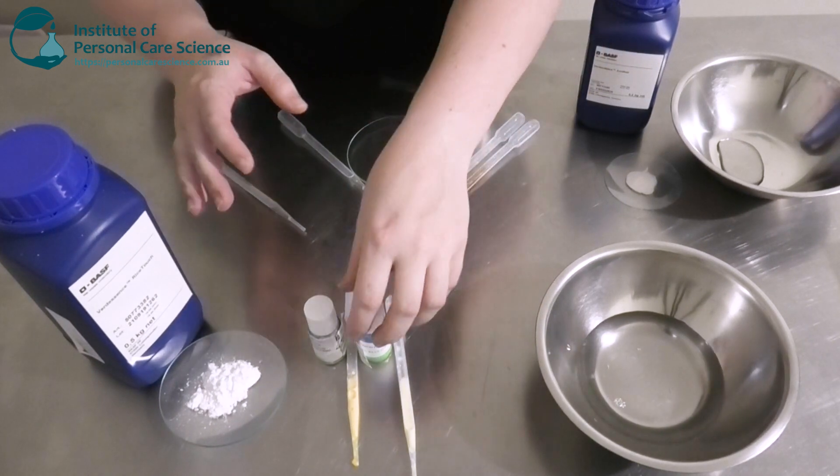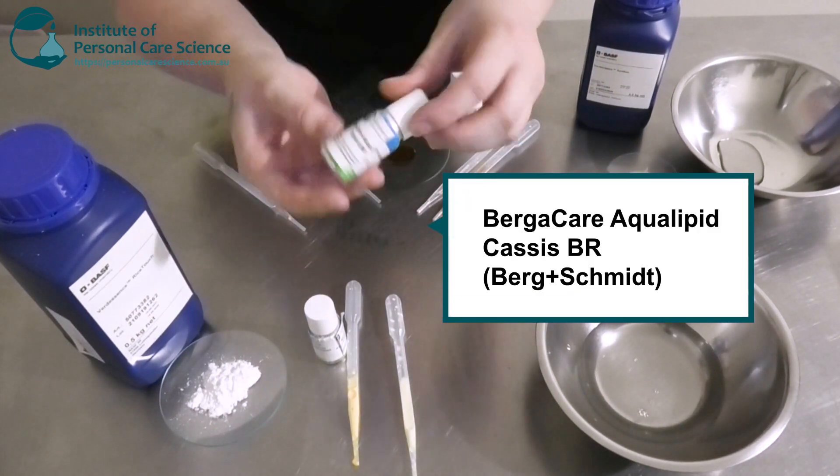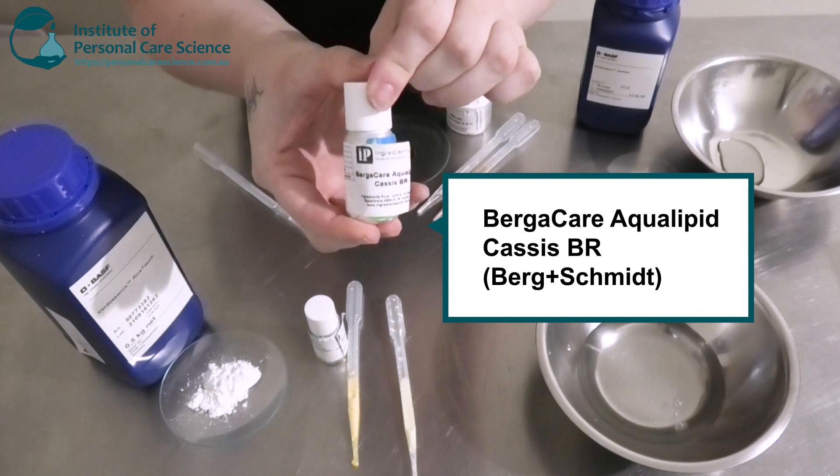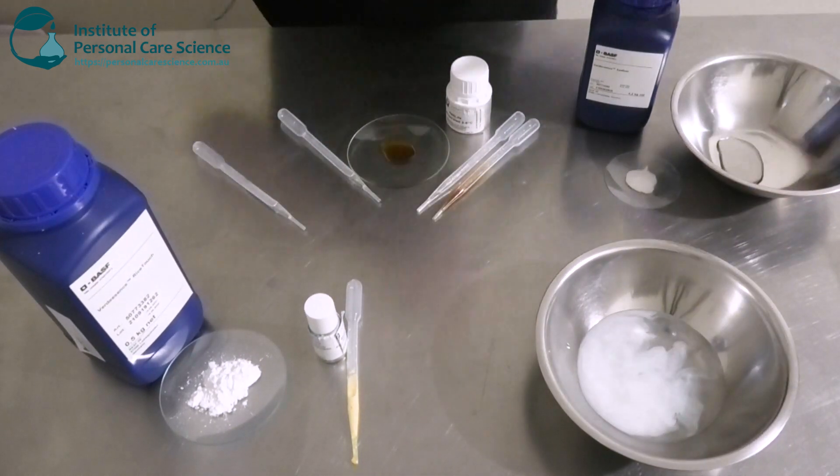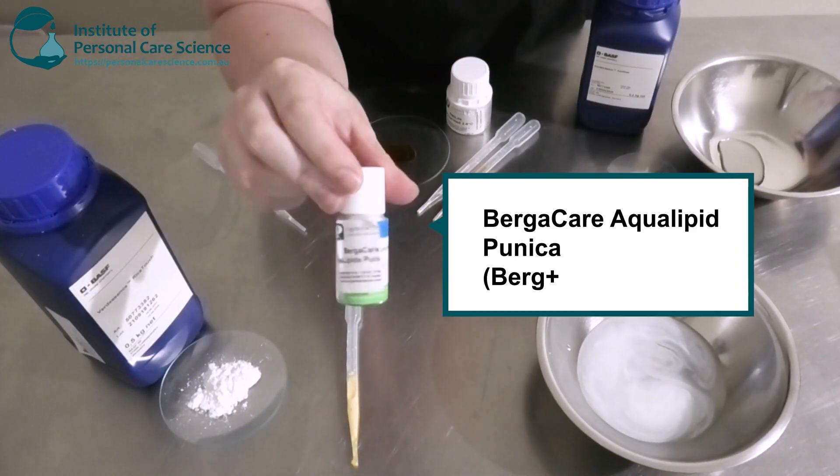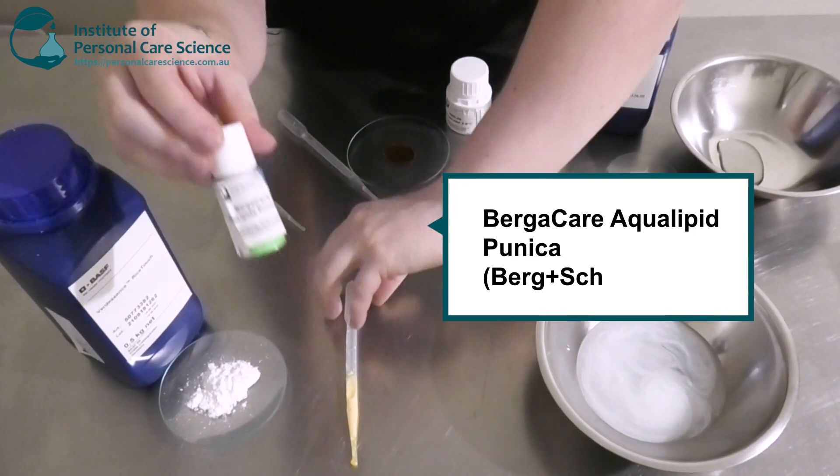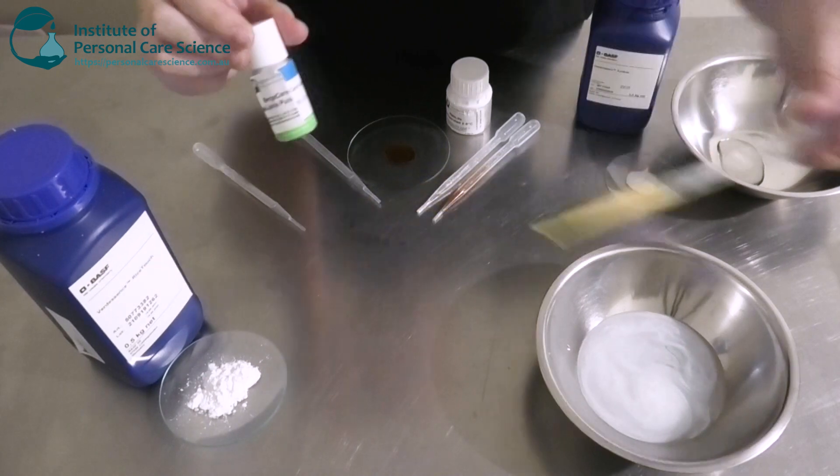Next I'm going to go in with these water soluble lipids. These are the Burger Care aqua lipids. So this one here is the Cassis BR, and this one here is the Burger Care Punica. It's got a nice beautiful orange color.